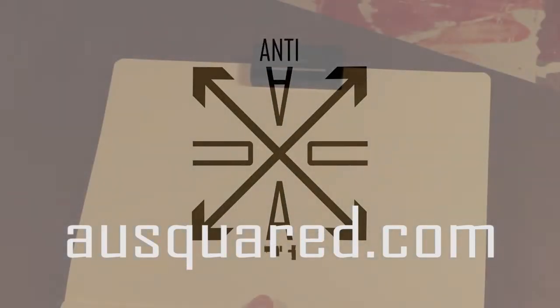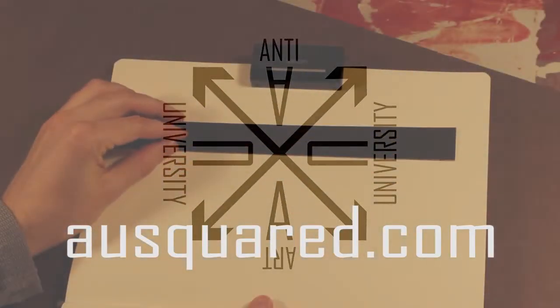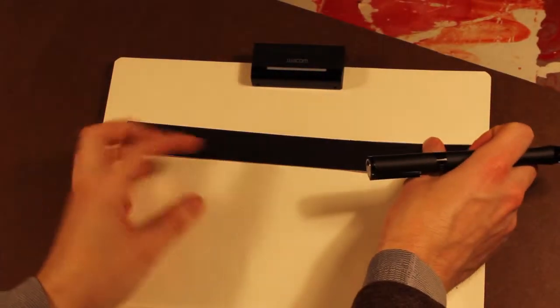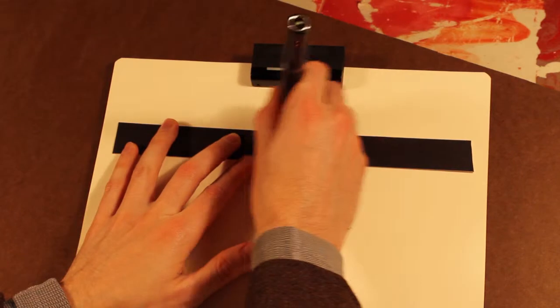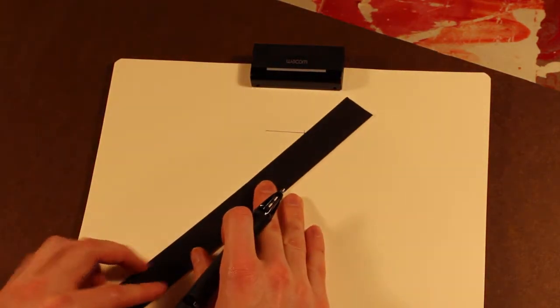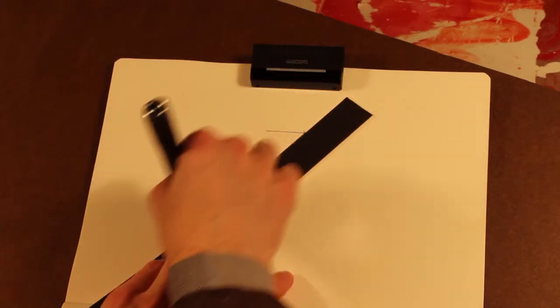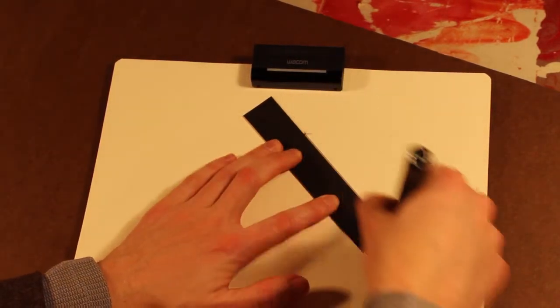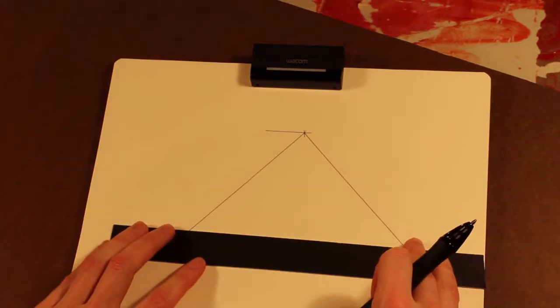We're going to extend the X method a little bit into doing grids in one point perspective. So we're just going to pick a vanishing point, we're going to draw a plane, should be comfortable drawing planes by now.